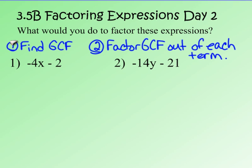Find the greatest common factor. As I look at number one, I see negative 4x and negative 2. Both of them have a 2 in common, but they also both have a negative in common. So I'm going to factor out negative 2 out of each of those. Watch our signs now. Negative 4 divided by negative 2 gives me a positive 2x — bring along the x.